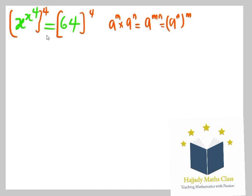Applying this to the left hand side, I'm going to have x raised to power x raised to power 4 multiplied by 4, which is the same thing as 64 raised to power 4. So applying the rule of indices,